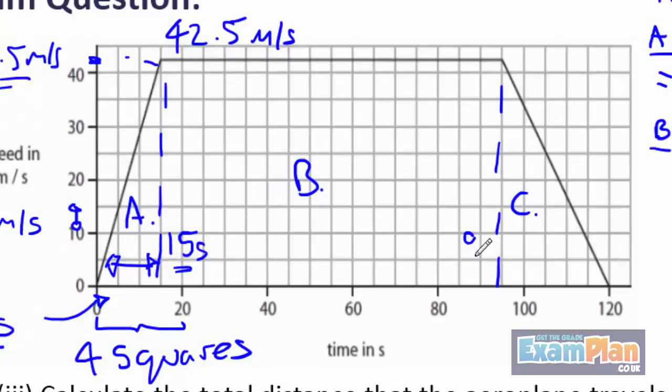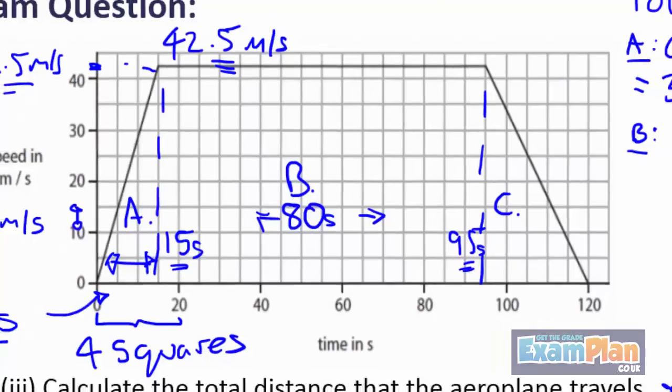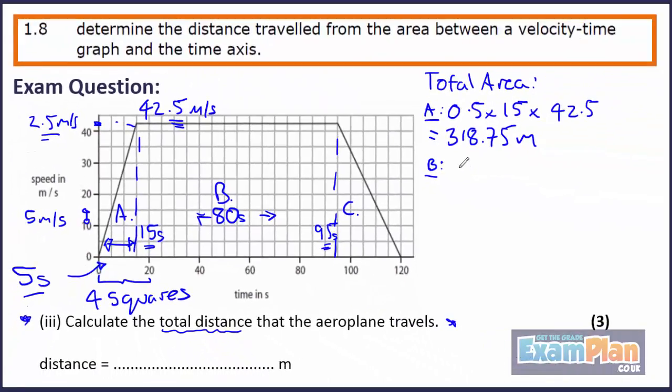Section B extends from 15 seconds to 95 seconds. So the base is 80 seconds. The height is still 42.5 meters per second. So the area is 80 times 42.5, which is 3,400 meters.